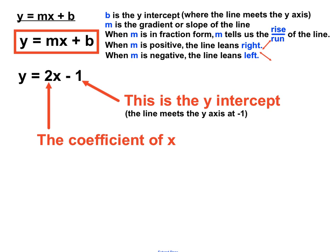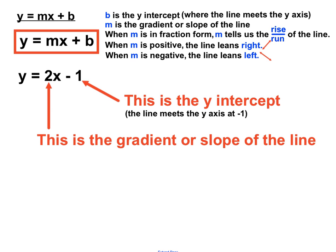These tell us different things. The constant, that minus 1, tells us the y-intercept — we know from that number that the line meets the y-axis at minus 1. The coefficient of x is the gradient or slope of the line, particularly in fraction form. Since the coefficient is 2, we can write it as 2 over 1, because a whole number can be written in fraction form over 1. That tells us there's a rise of 2 for every 1 that we go across.